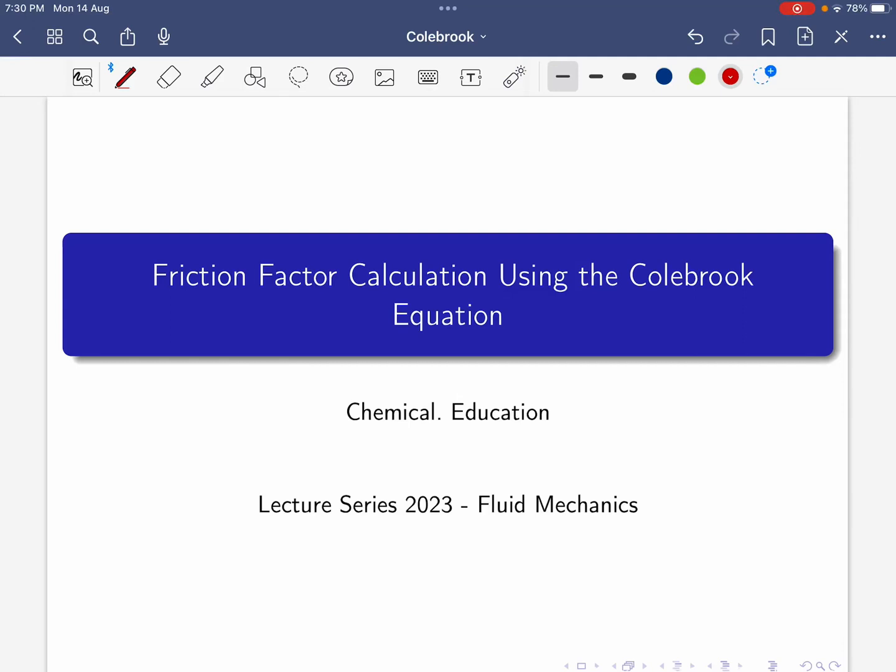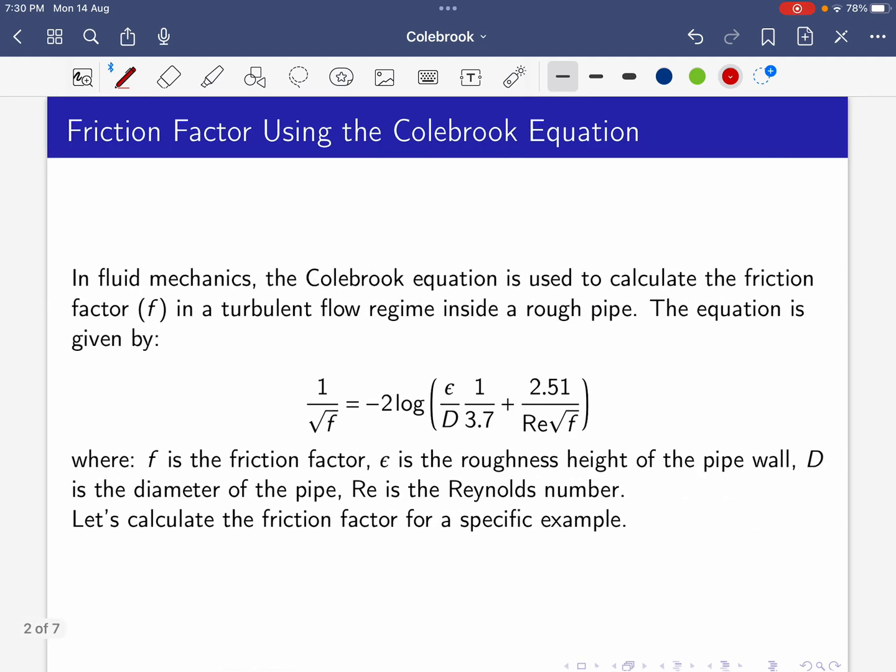Today I will talk about friction factor calculation using Colebrook equation. In fluid mechanics, the Colebrook equation is used to calculate friction factor in turbulent flow regime inside a rough pipe. The equation is given by: 1/√f = -2log(ε/D × 1/3.7 + 2.51/(Re√f)).